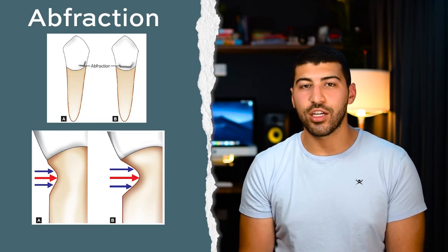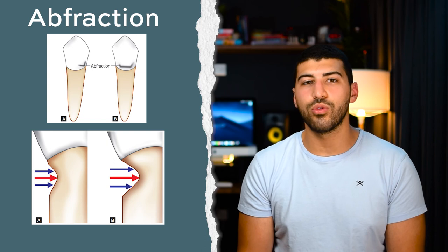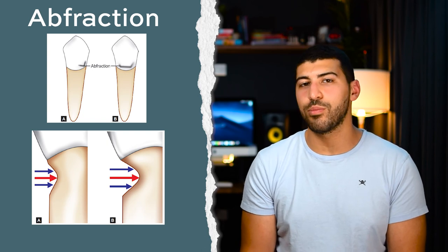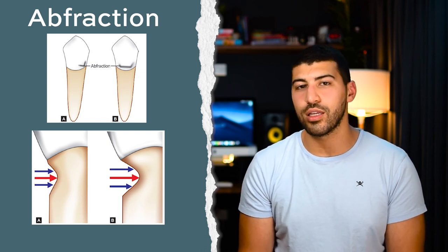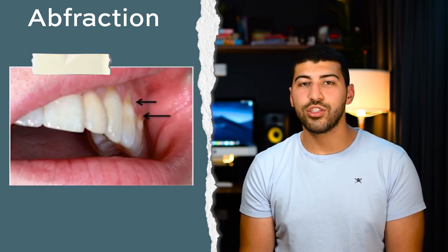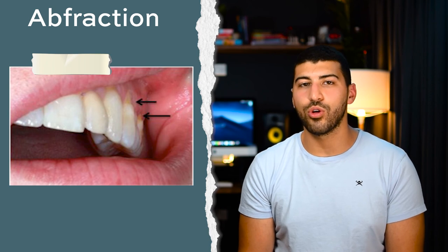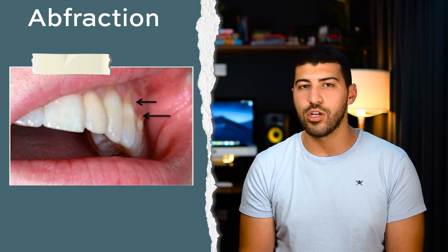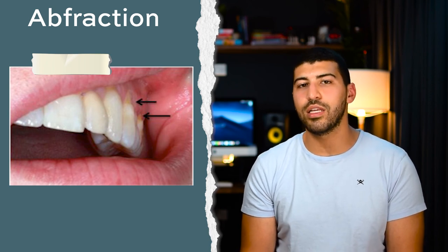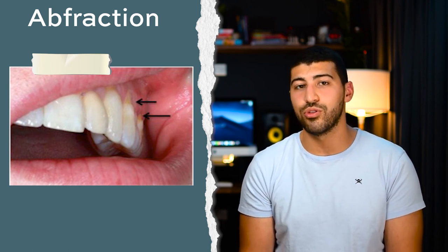The last type of tooth surface loss is known as abfraction. This is defined as a fracture on the cervical margin caused by flexures upon occlusal loading. Abfraction is sometimes missed out from books which discuss tooth surface loss, because it's not believed to be as relevant or necessarily true.